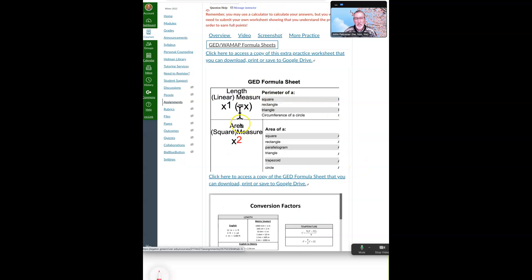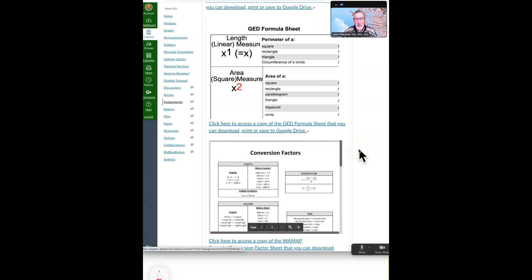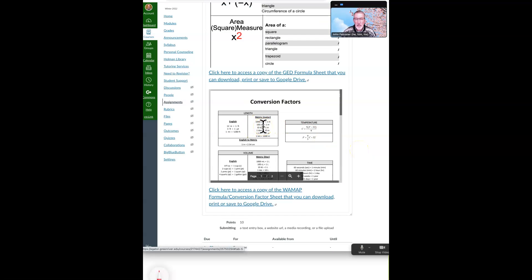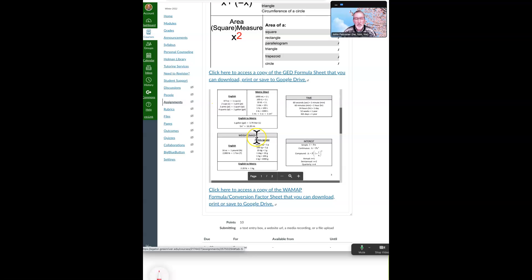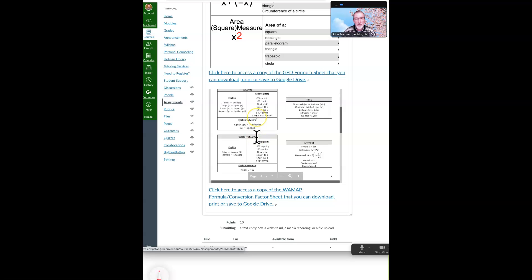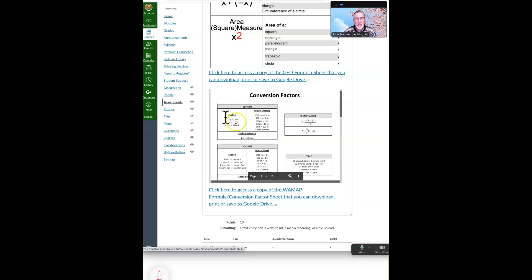And this is the GED formula sheet and below it is the WAMAP conversion factor. And so we're converting miles per hour to feet per minute. So we have lengths here. There are others we will use later for volume and weight, but right now we're going to use length.